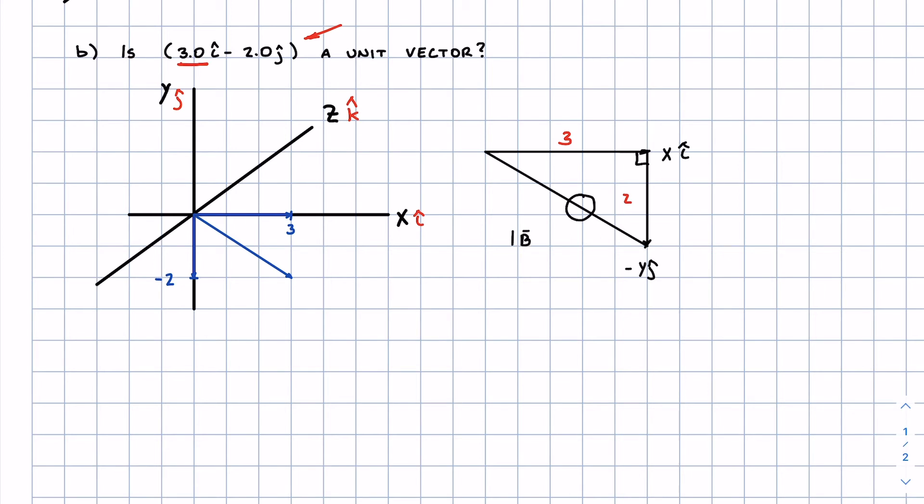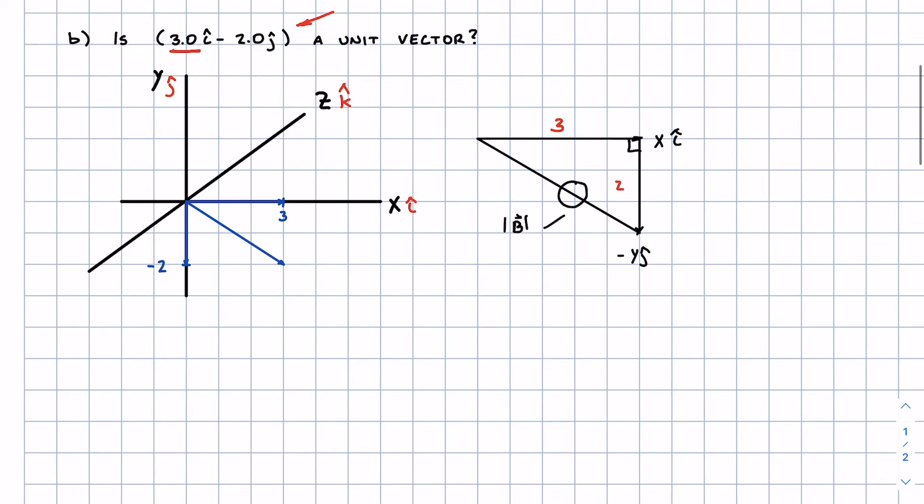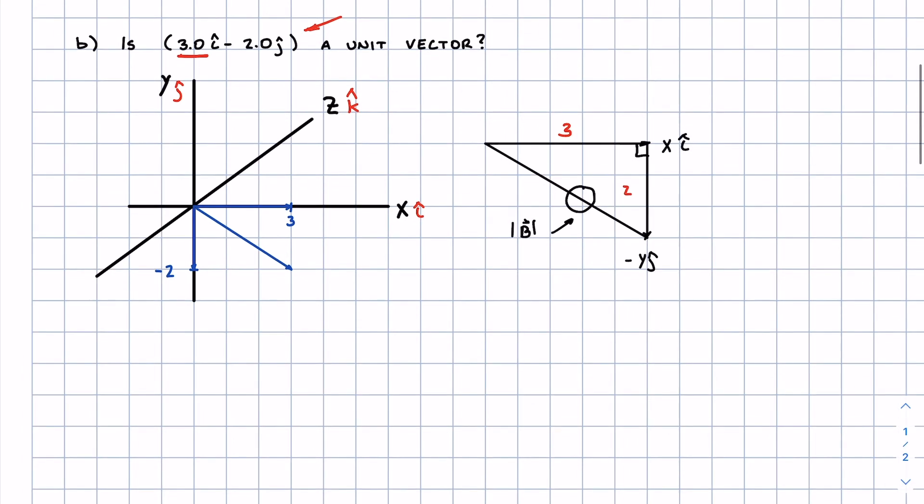B vector. This is exactly where Pythagorean's theorem comes into play. So we know that the magnitude of the B vector, because of Pythagorean's theorem, is equal to the square root of x squared plus y squared.